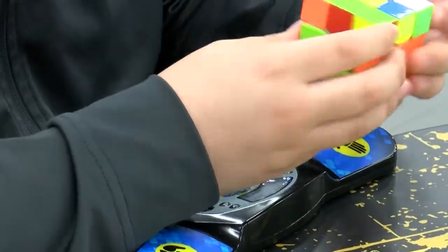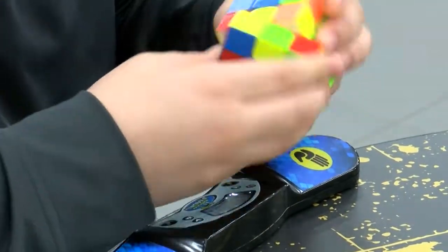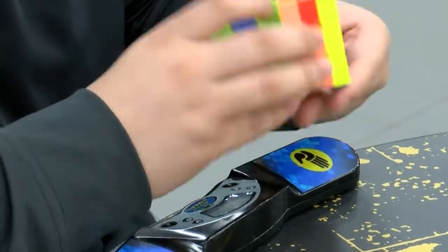The rules of cubing are fairly simple. It involves a touch-sensitive timer that starts when you remove your hands and stops when you place your hands back on.